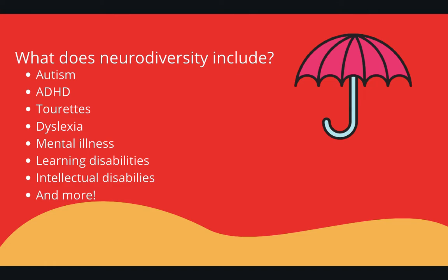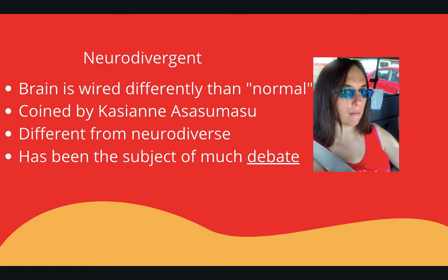What does neurodiversity include? Neurodiversity is an umbrella term that includes any kind of brain-based disability — autism, ADHD, Tourette's, dyslexia, mental illnesses, learning disabilities, intellectual disabilities, and more. Autism is usually the disability associated most commonly with neurodiversity, for reasons we'll get into, but it includes any kind of brain wiring that is considered deviant from the norm.